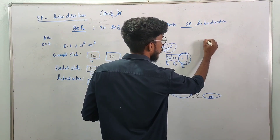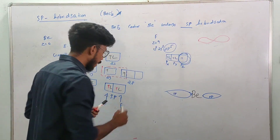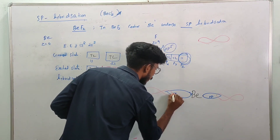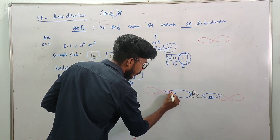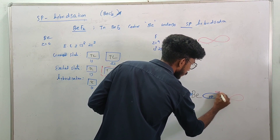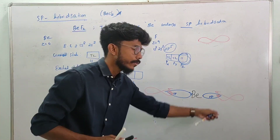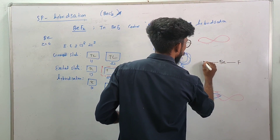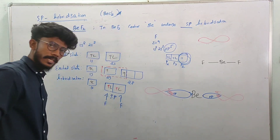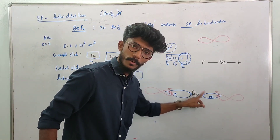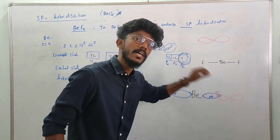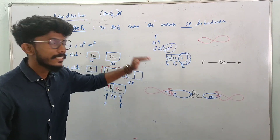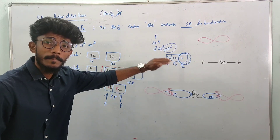If you look at the shape, there is no pure p or dumbbell shape. There are two lobes in SP hybridization — one lobe here and the other lobe here. This forms a sigma bond. This is the BeF2 hybridization structure — this is sp hybridization.